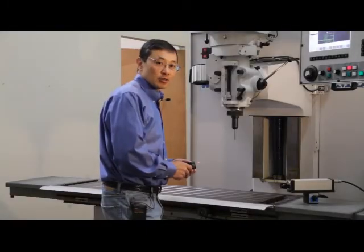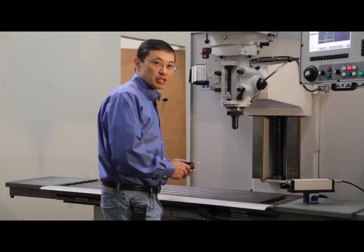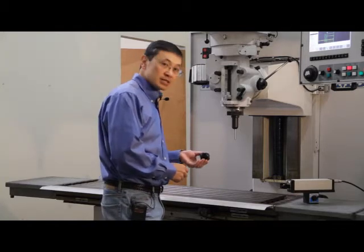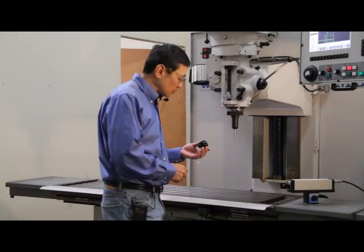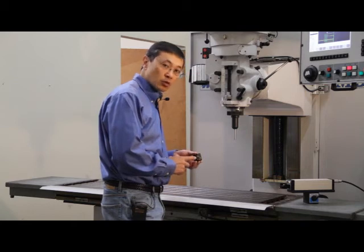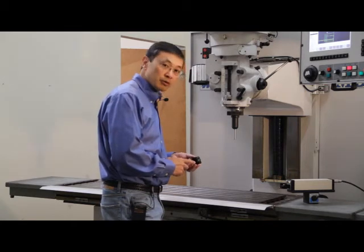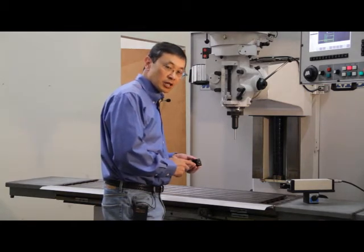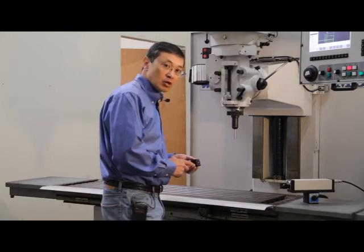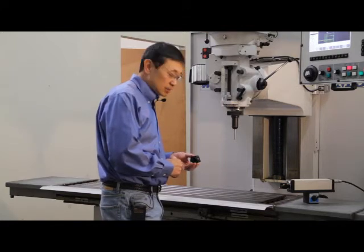I am going to perform the laser alignment on the x-axis of this machine. I am going to first place this retroreflector on the spindle. This retroreflector is a corner cube. A corner cube reflects the incident beam of the laser directly back at the same angle, which makes the alignment process very simple.